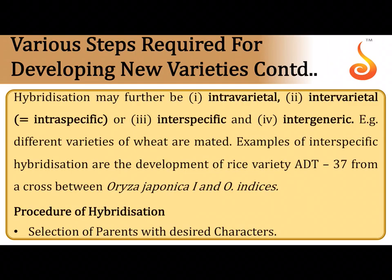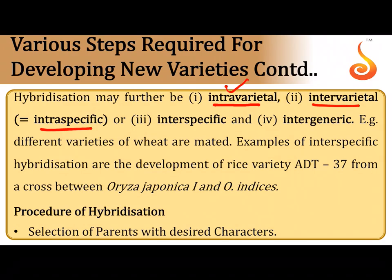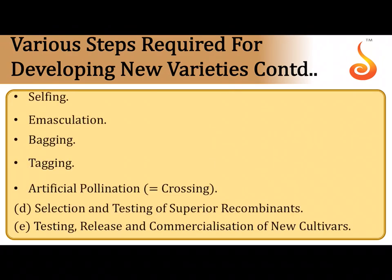Hybridization may be intravarietal (within the same variety), intervarietal (between two different varieties), intraspecific (within the same species), interspecific (between two different species), or intergeneric (between two different genera). The procedure begins with self-pollination to create pure breeding plants — homozygotes — ensuring no dilution of characters and uniformity of expression. Pure breeding lines are created by repeatedly self-pollinating for six to seven generations.